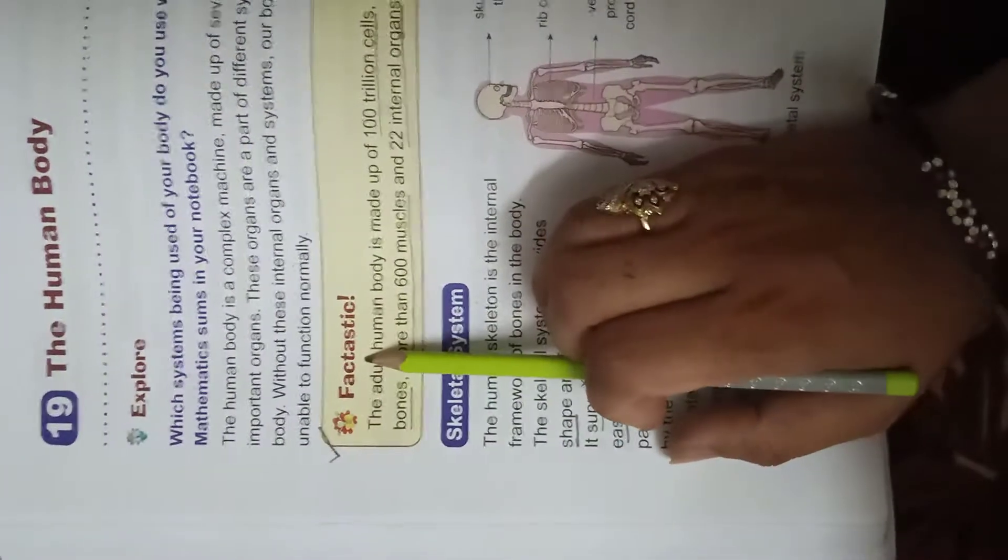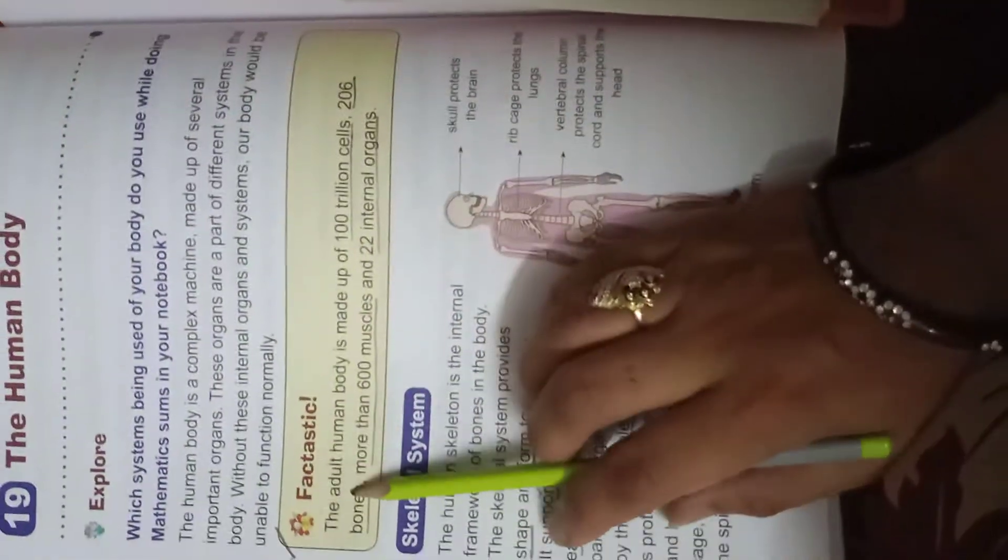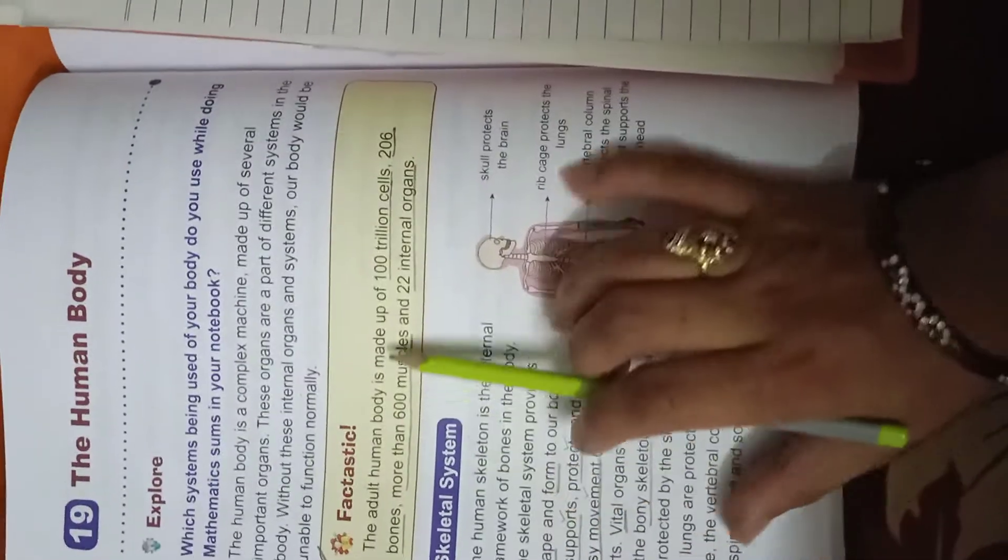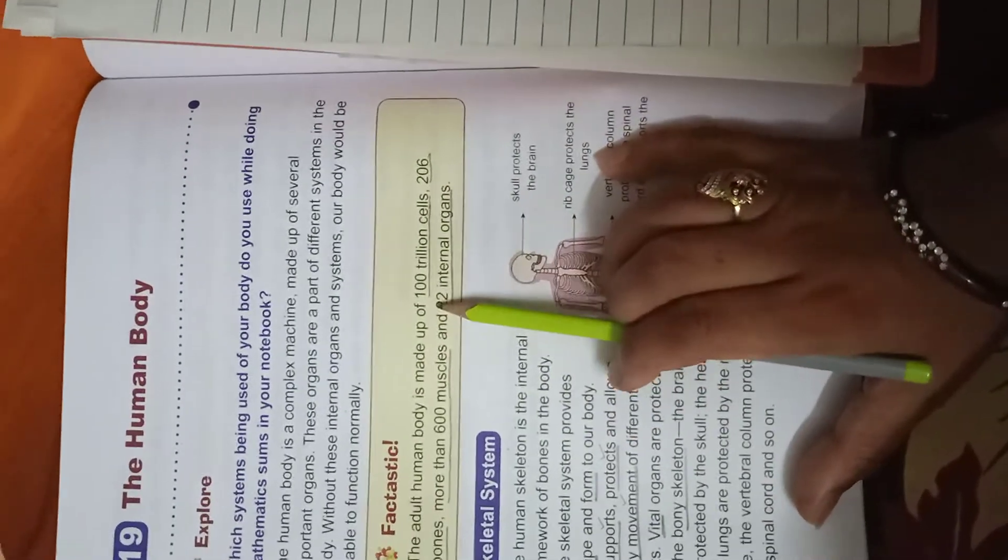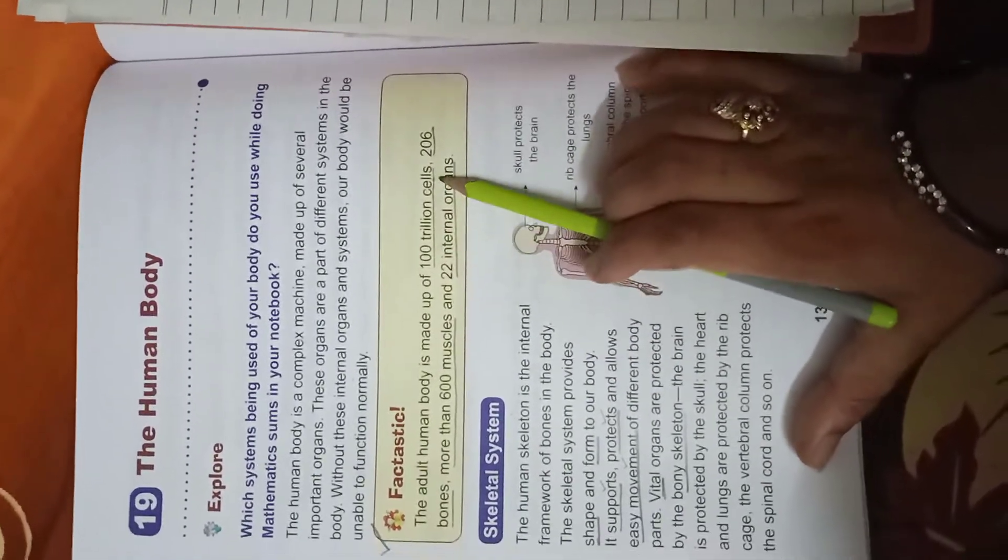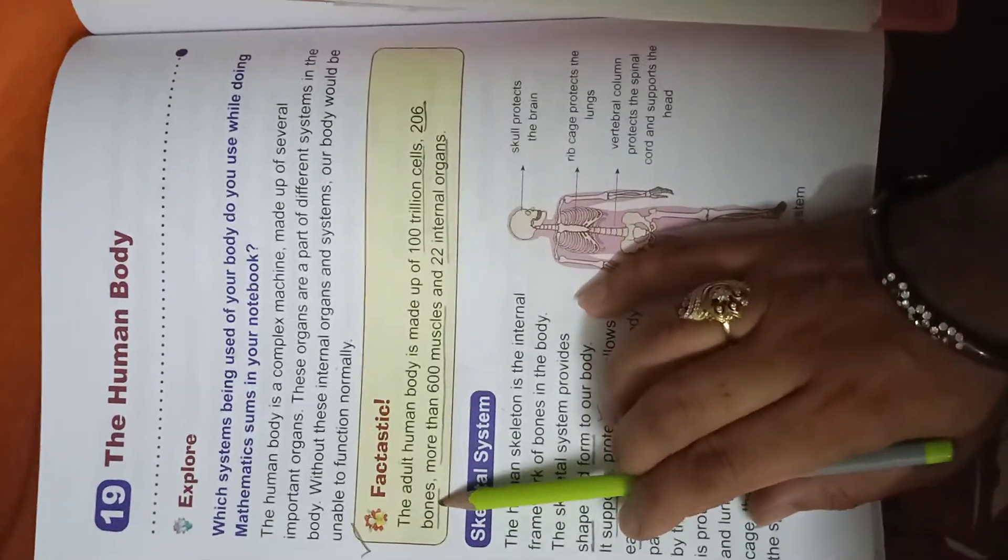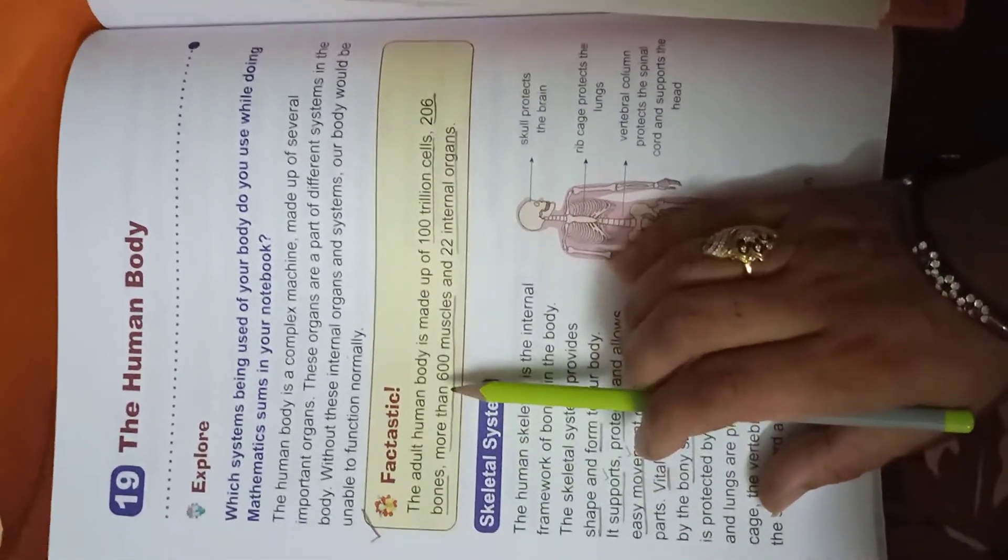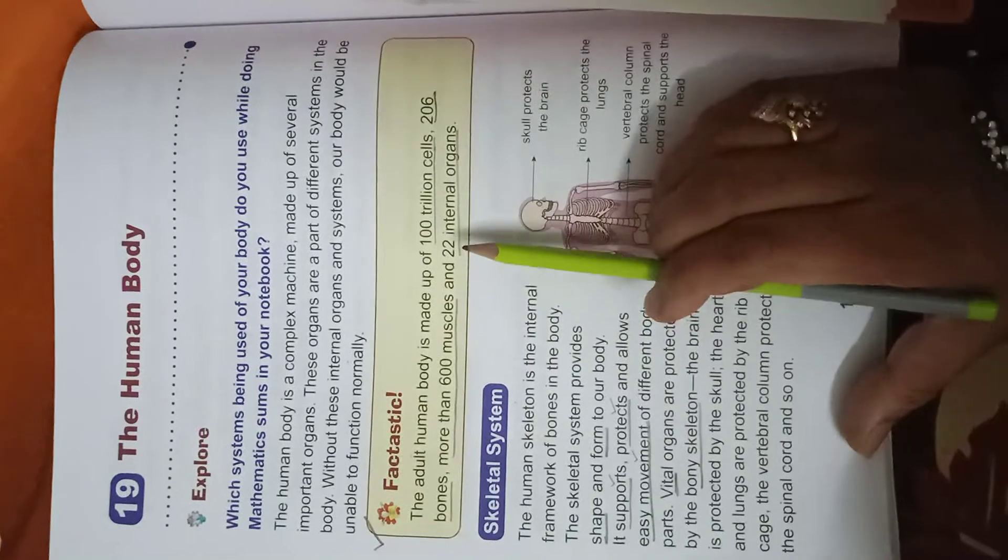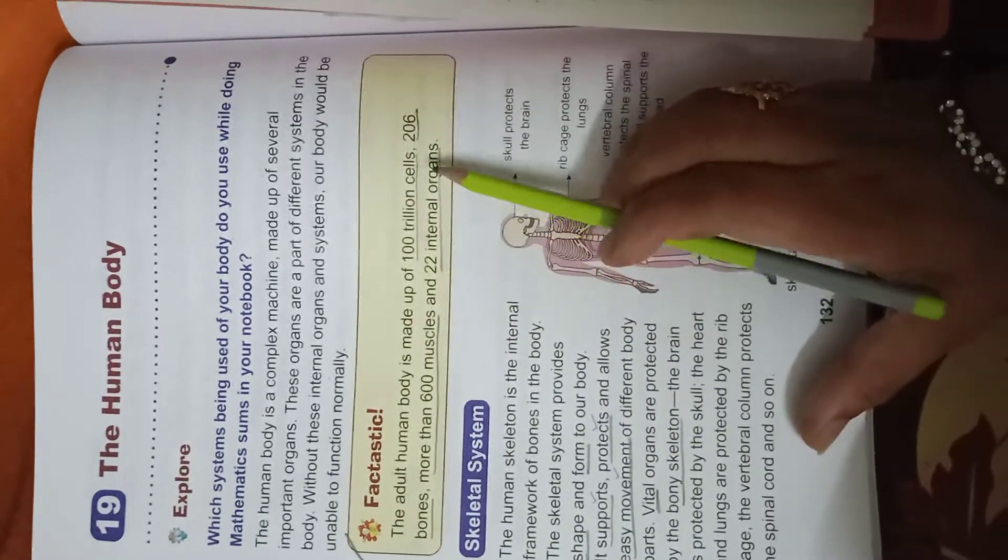Now comes fantastic facts. You all have to learn this. The adult human body is made up of 100 trillion cells, 206 bones, more than 600 muscles, and 22 internal organs.